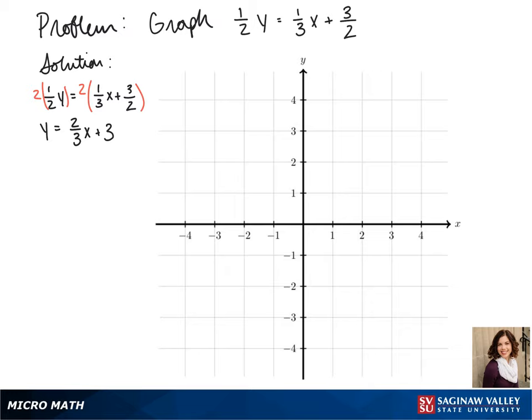So we get y equals 2 thirds x plus 3. Now we're in slope intercept form, so we solve for our y intercept.